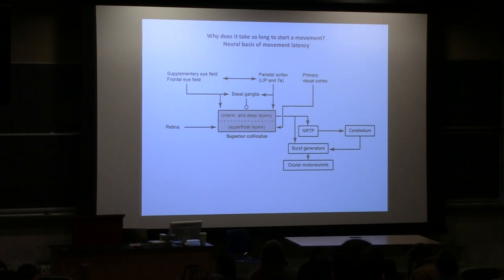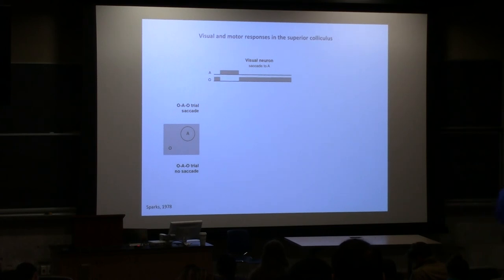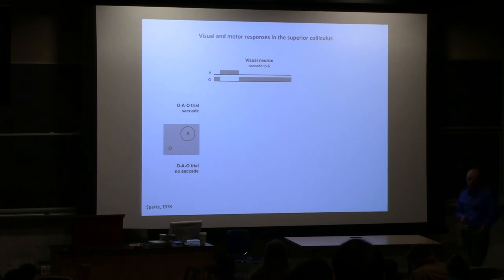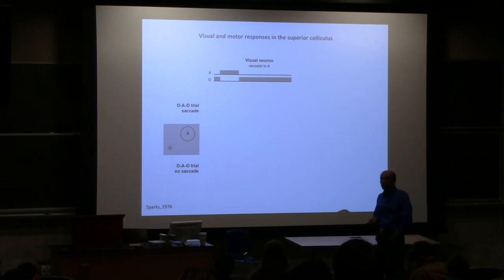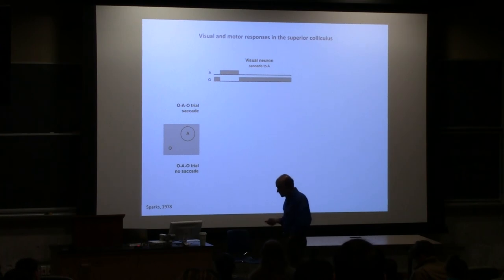The second reason for focusing on eye movements is the rich history from Hopkins — many BME professors work on these structures. So we know about it from a historical perspective as well. Most of the data today will come from monkeys making eye movements, with recordings made from the colliculus.